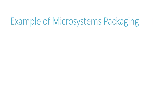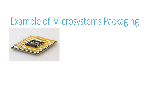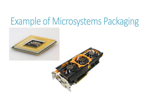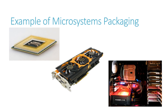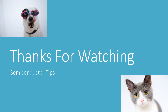Here is an example of microsystems packaging. The CPU is in first level packaging, the graphics card is the second level, and the third level has the motherboard connecting all the components together.